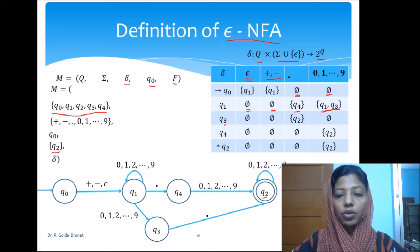And from Q3, we do not have transition for epsilon and the sign. From Q3, if we get a dot, we go to Q2. And from Q3, we do not accept the digits as well. So, it is empty.